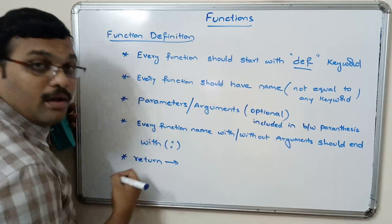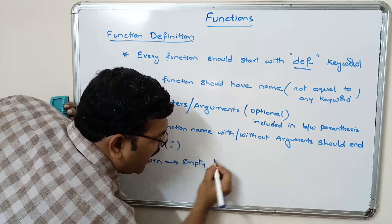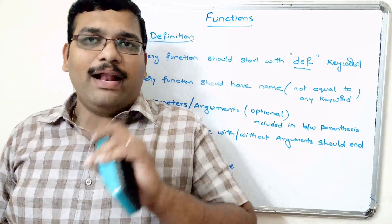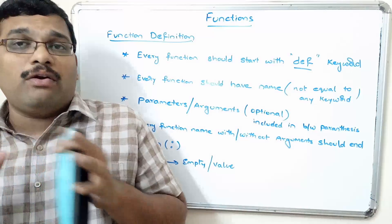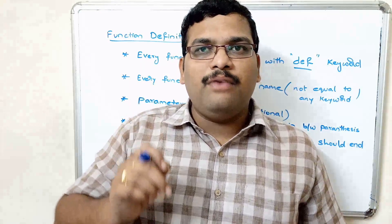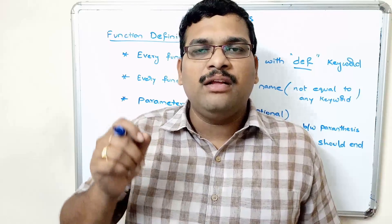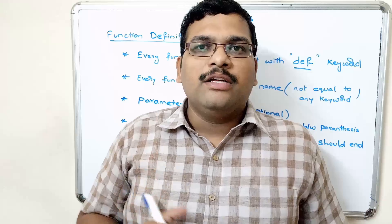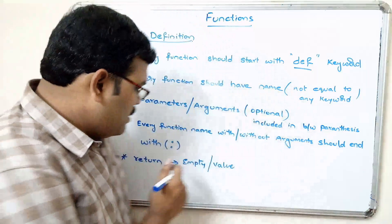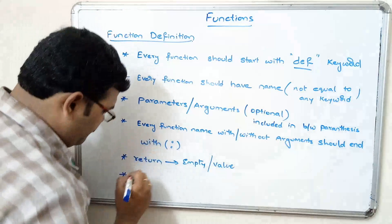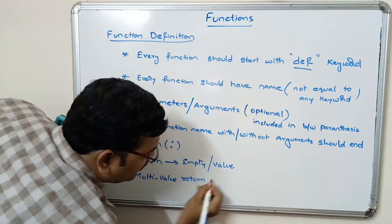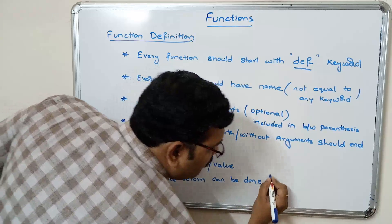The return can be empty or a value return. In C language every function can return only a single value — a function cannot return multiple values. But here in Python, a function can return multiple values to the calling function, and that is done using tuples. So multi-value return can be done using tuples.